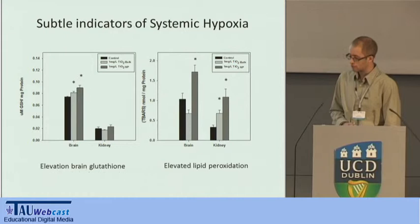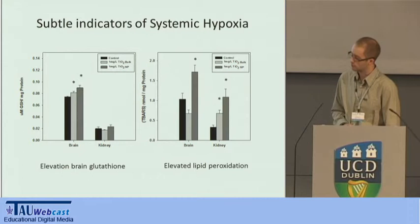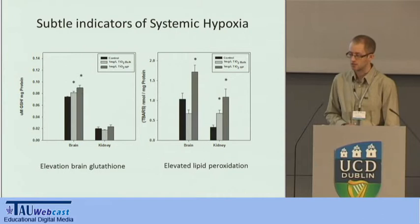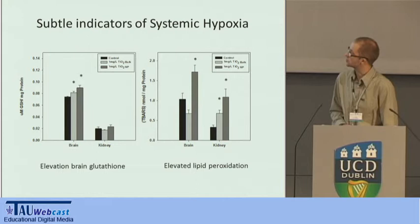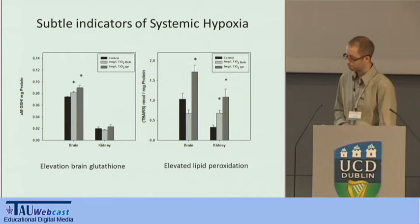Following the 14-day exposure, some effects are starting to appear indicating systemic hypoxia. Although we didn't see accumulation of titanium in the brain or the kidney, we're starting to see changes in several biomarkers for oxidative injury — though the effects are quite small. In the left-hand panel, total glutathione in brains and kidneys shows a stepwise significant increase for fish exposed to the nanoparticle. This is also true for levels of lipid peroxidation in these organs — providing some evidence for an effect taking hold within these tissues.